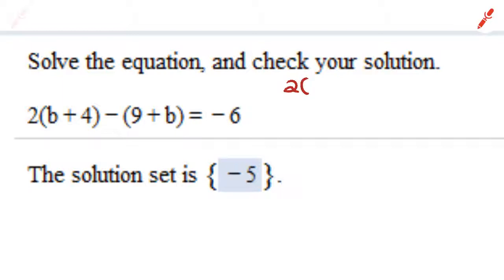2 times b plus 4 plus negative 1, because this minus sign acts like a negative 1, times 9 plus b equals negative 6.